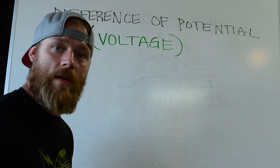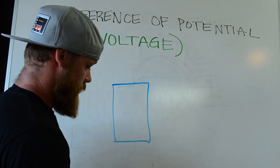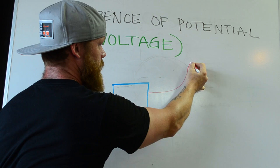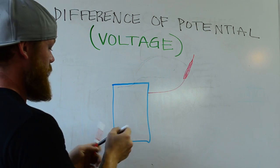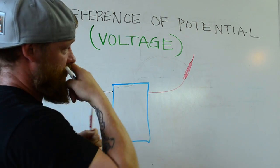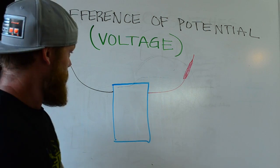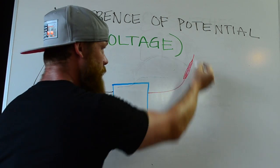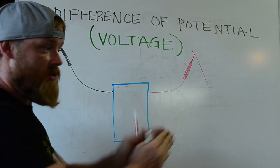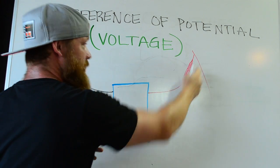Just understand that there are certain things in an electrical system that are at the same potential, and there are things that are at a different potential. So when you have a multimeter, you've got one red lead with a little spike on it and one black lead with a little spike on it. They do that because you're trying to find two different potentials — a positive and a negative, or a hot and a neutral, or a hot and another hot. So if you have one hot wire and another wire coming in, you're probably going to have 208 volts or 240 volts — such a difference of potential that the meter can read the strength of that difference.